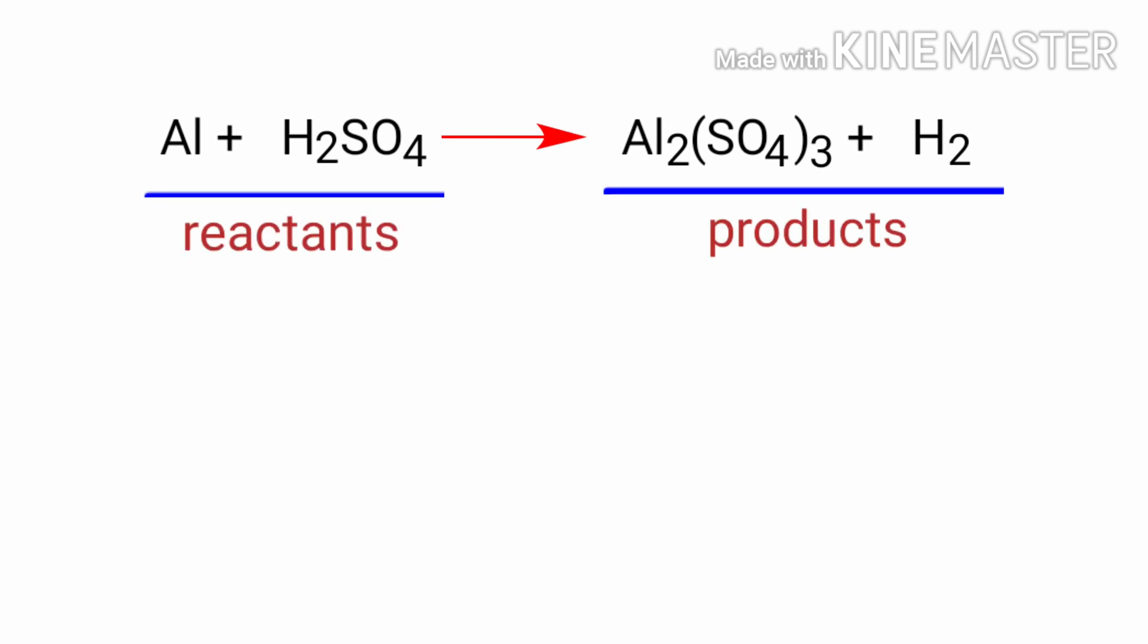In this equation the reactants are Aluminium and Sulphuric Acid and the products are Aluminium Sulphate and Hydrogen.